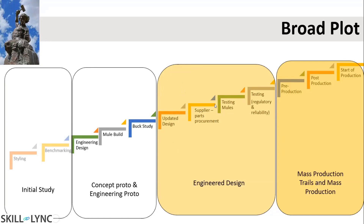Once suppliers provide the data, we start creating testing tools. These testing tools must meet durability and regulatory requirements — both are quantifiable terms. Durability refers to proving ground tests, while regulatory requirements refer to crash, braking, and similar tests. Once all these are done, we go into pre-production, where all parts are brought together and the assembly process is optimized.